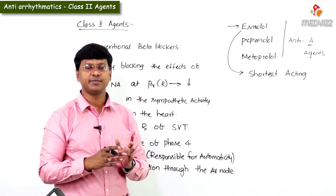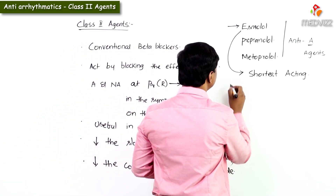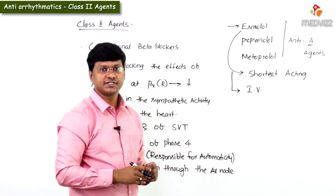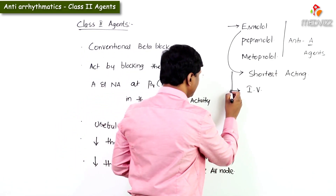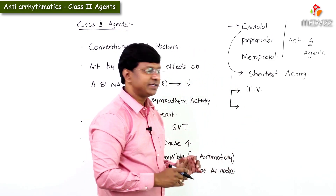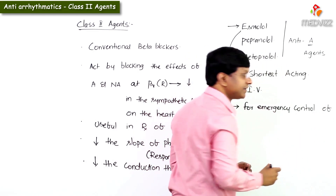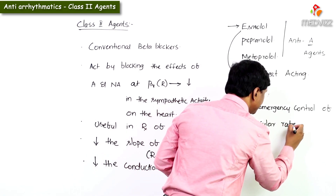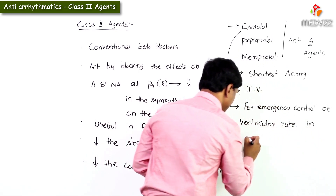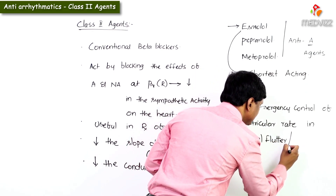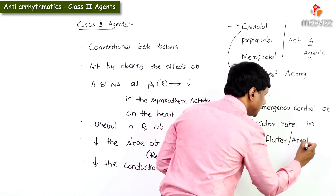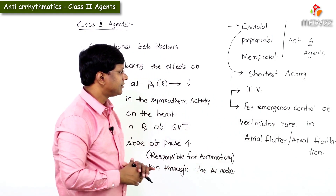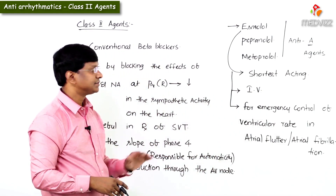Because it is the shortest acting, esmolol can be used intravenously for the emergency control of ventricular rate in atrial fibrillation or atrial flutter.